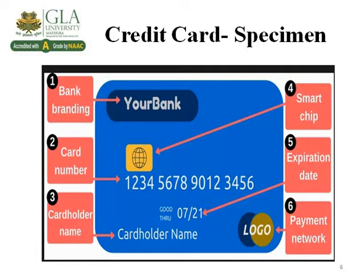Now the important part — the specimen of the credit card. There are six things on the front side. Point one is the bank logo and description, which defines which bank the credit card belongs to. Point two is the card number, which is majorly a 16-digit code, though some banks in different countries may have 14 digits, ranging up to 19 digits.